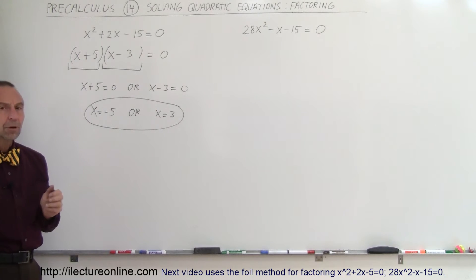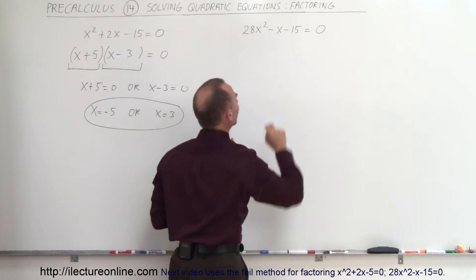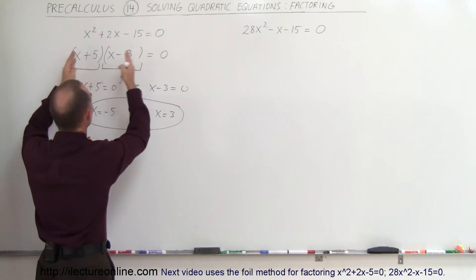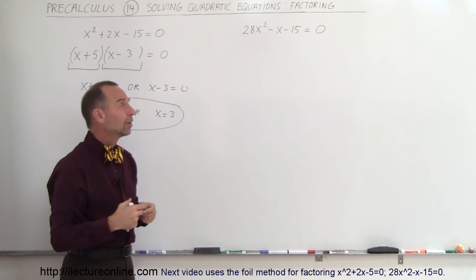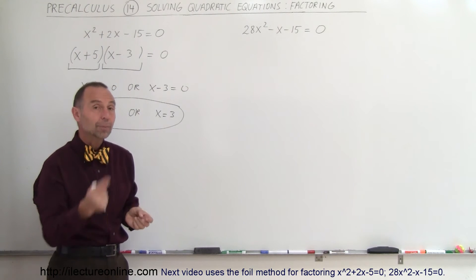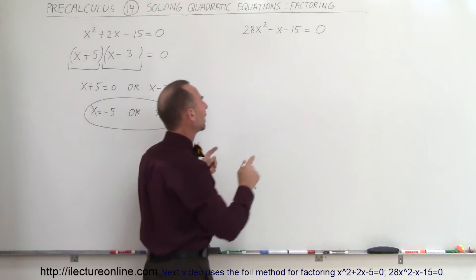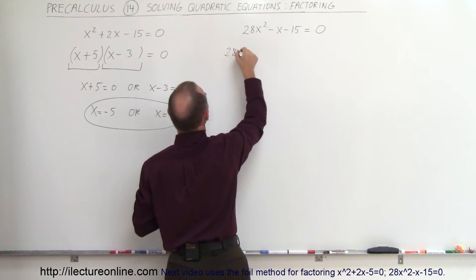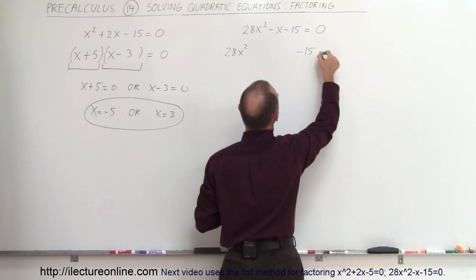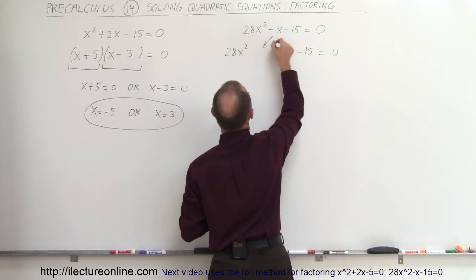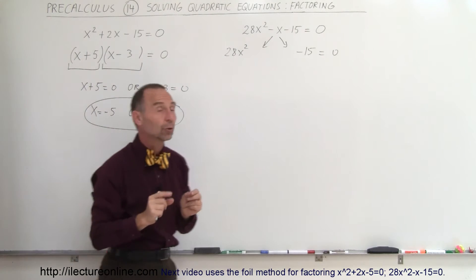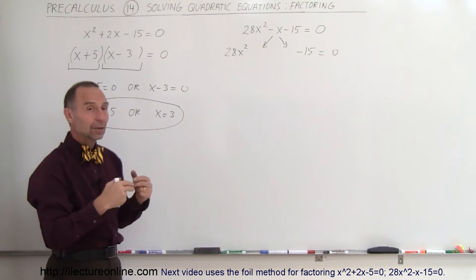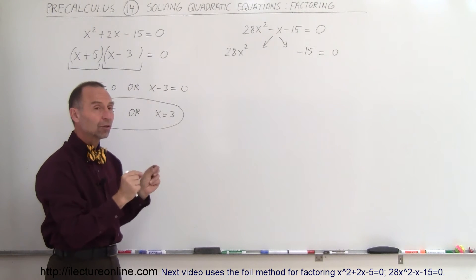Our next equation is a little bit more complicated: 28x squared minus x minus 15 equals 0. If you were to set up two sets of parentheses with some trial and error, you would be able to solve it, but there's a clever technique. What I like to do is separate these out — write it as 28x squared minus 15 equals 0, and the middle term is going to be separated into a sum of two middle terms with the variable x.